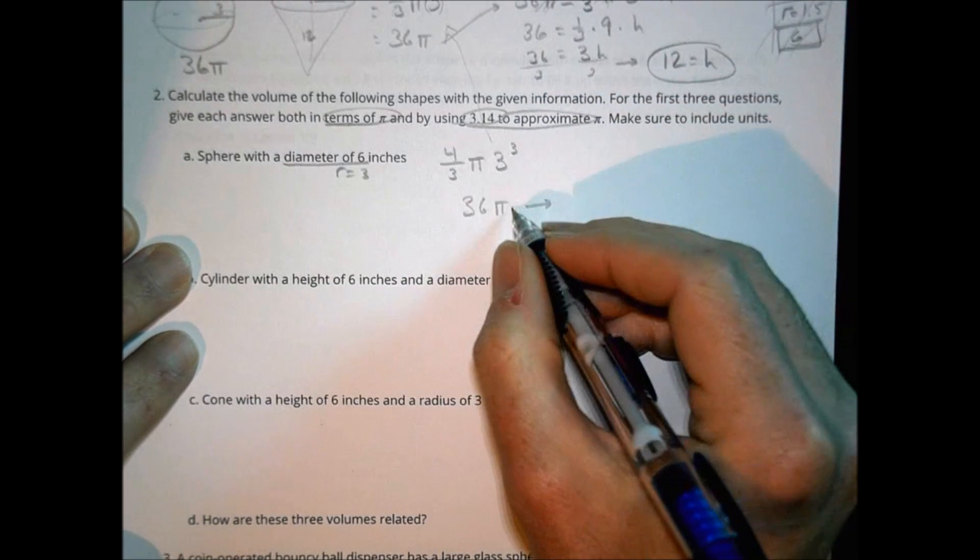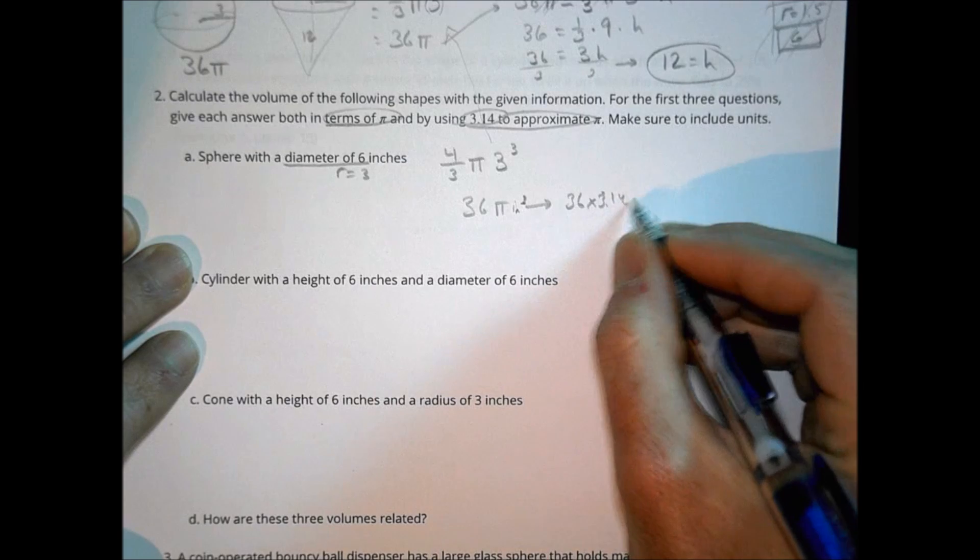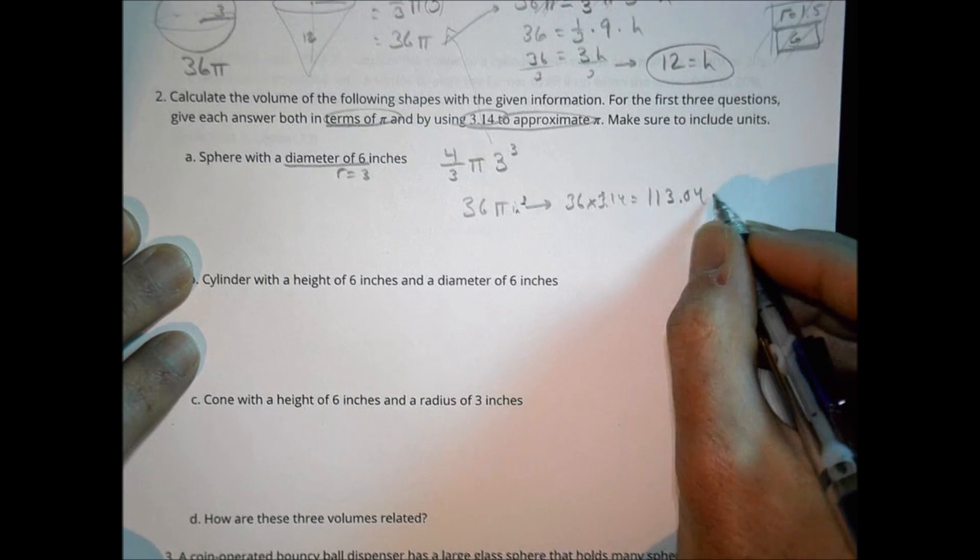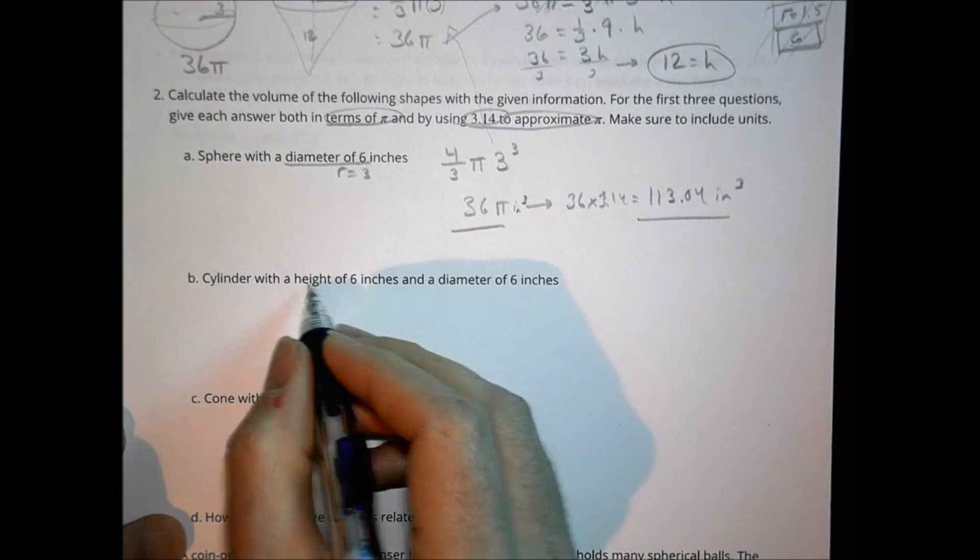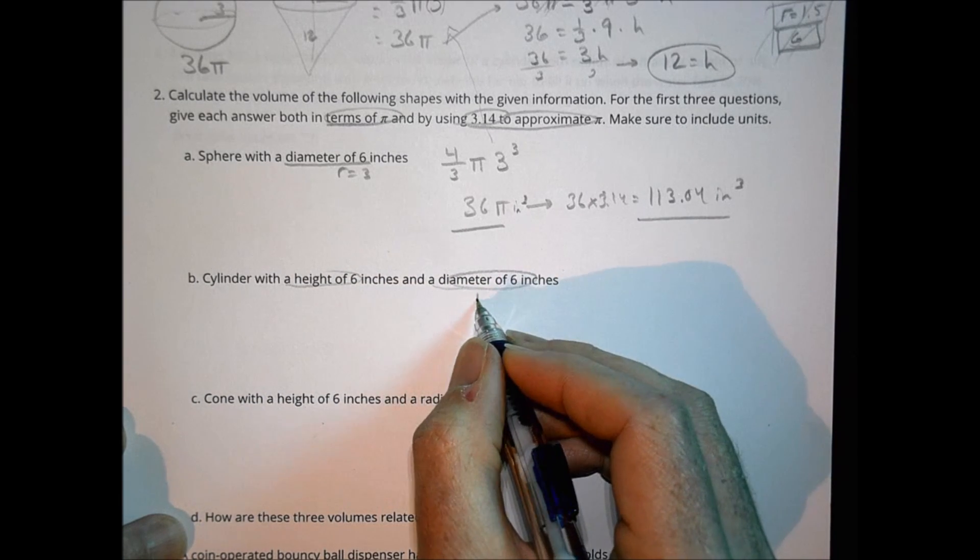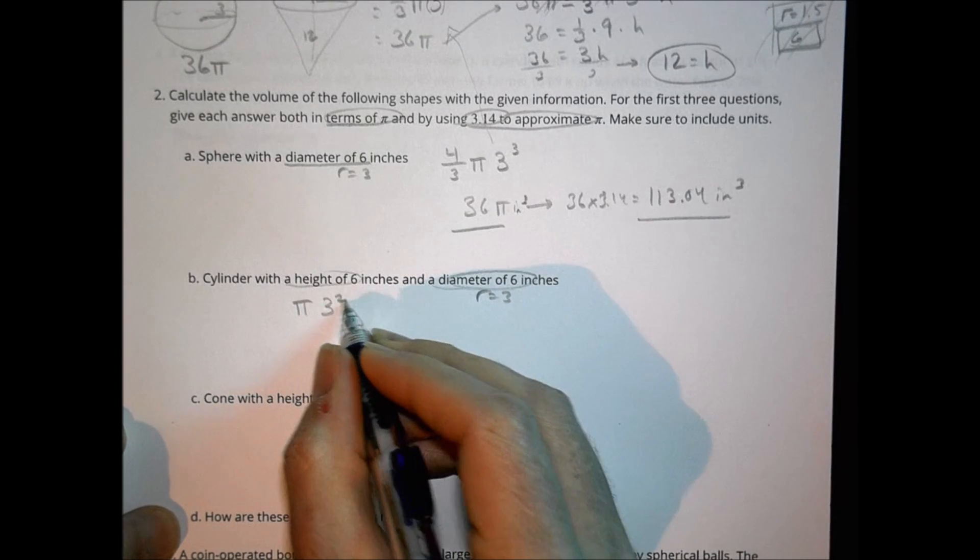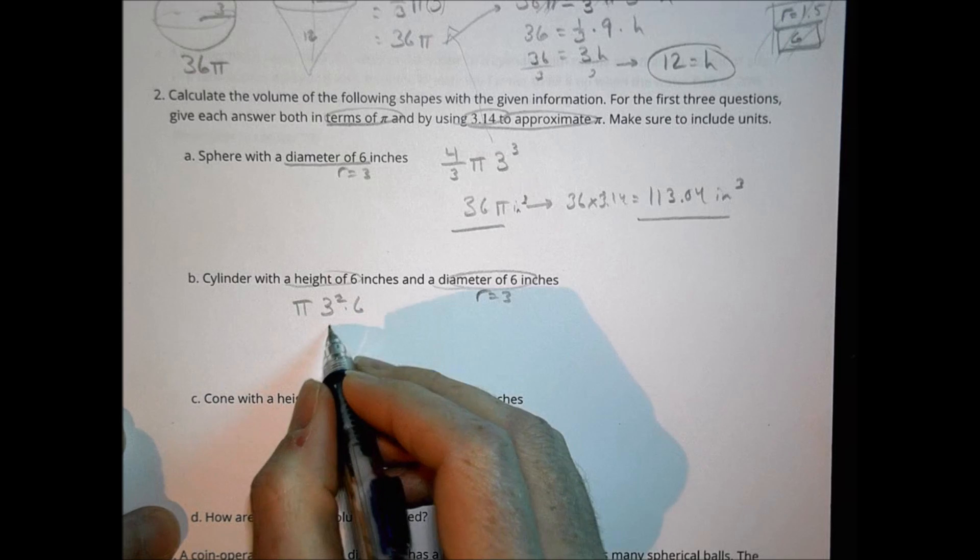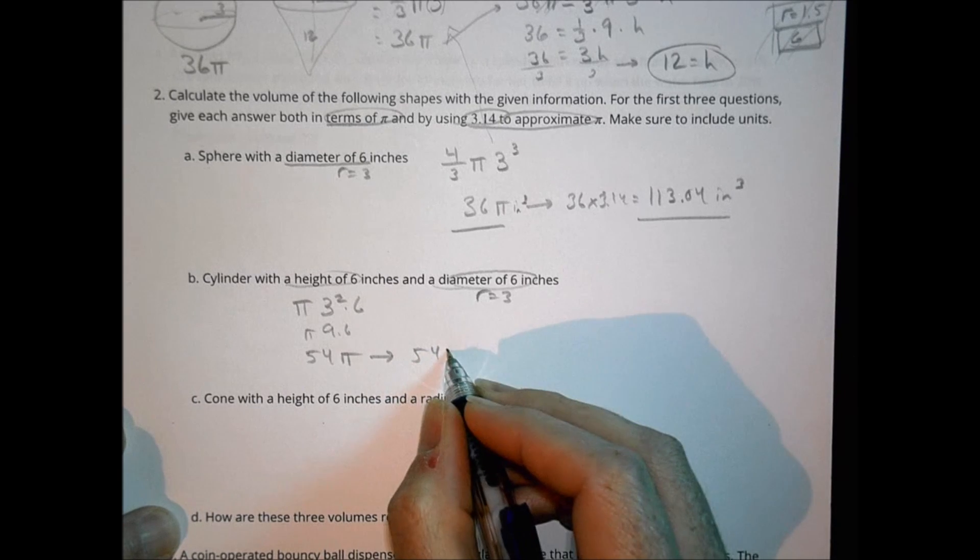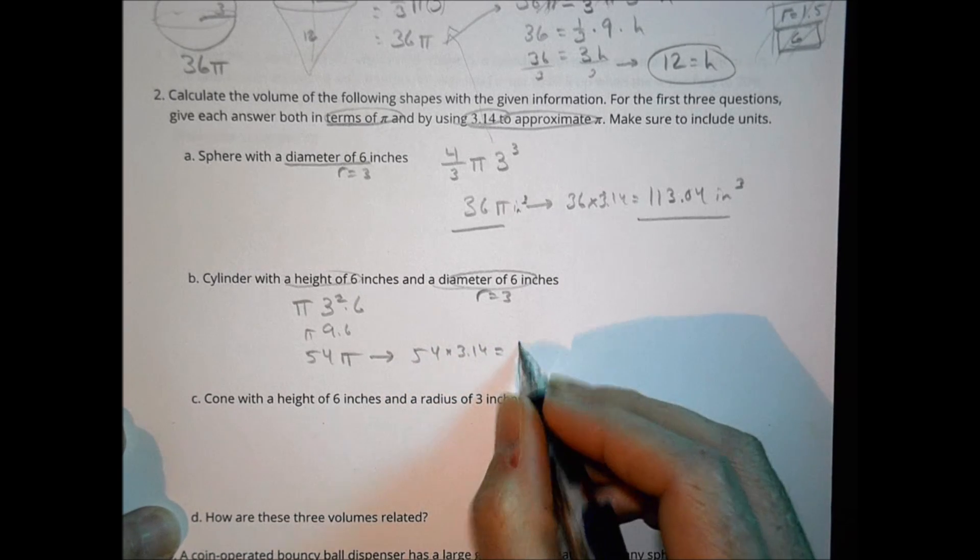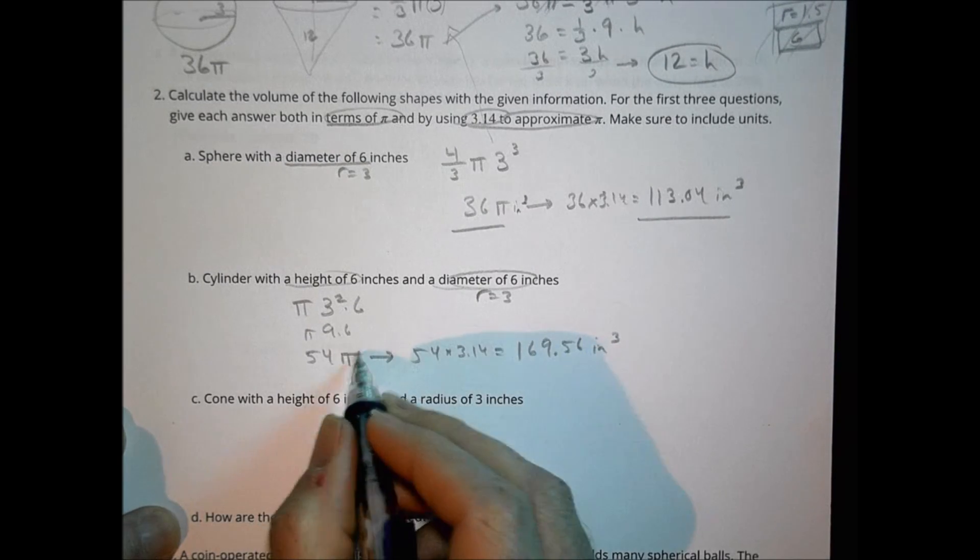So to make that in terms of a number, and again, this is inches. We call it inches cubed there to label it. This would be 36 times 3.14, which equals 113.04 inches cubed. So those are my two answers right there. Cylinder. Height of six. Diameter of six, which means our radius equals three. So that's going to be pi times the radius squared times the height. So three squared is nine times six is 54 pi. And then if I do 54 times 3.14, I'd end up with 169.56 inches cubed. So we have an answer and an answer.